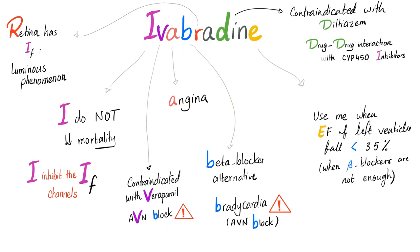A: I'm used for angina. B: I'm used as a beta blocker alternative, when the patient is not improving after beta blockers or when a patient cannot tolerate beta blockers. As a side effect, I can cause bradycardia, which is the same as AV nodal block. R: retinal side effects because the retina has funny channels — luminous phenomenon.